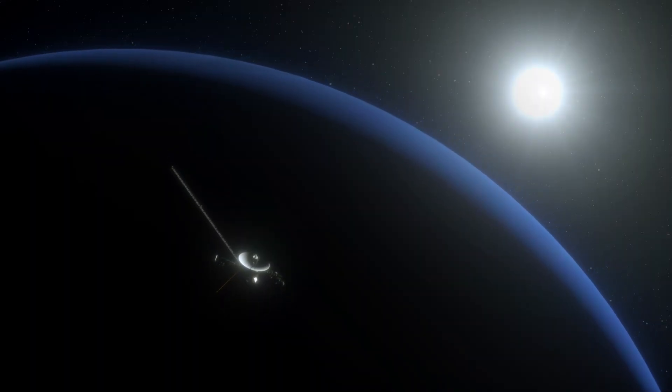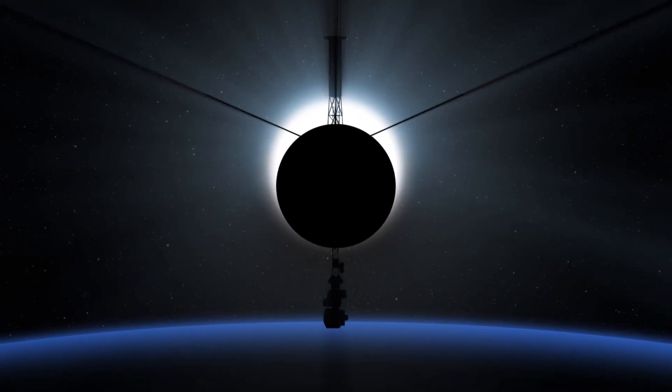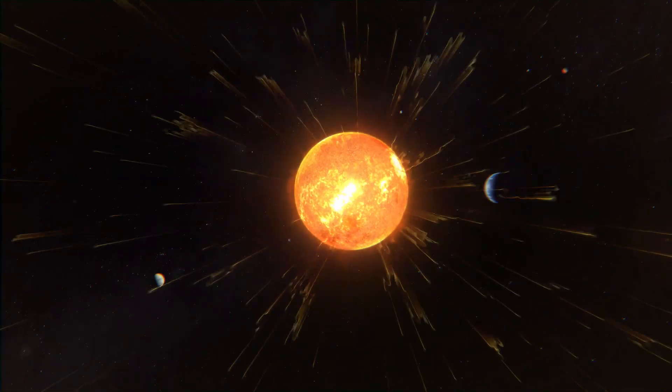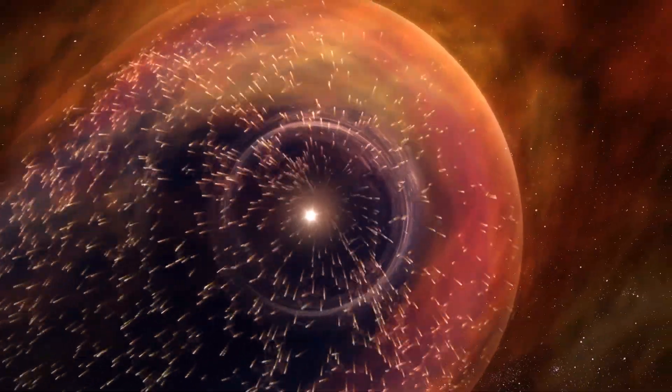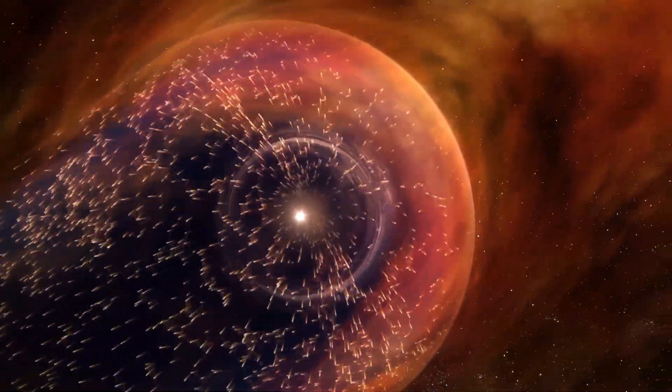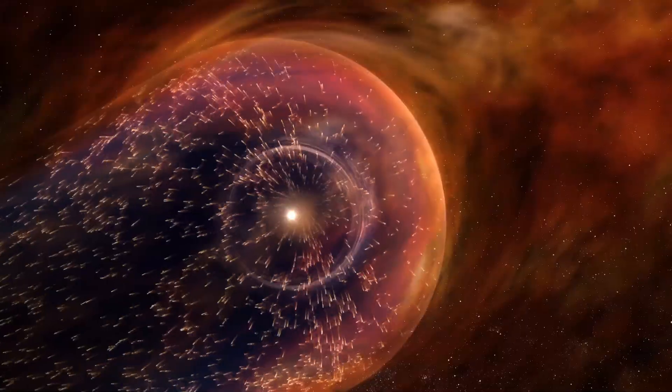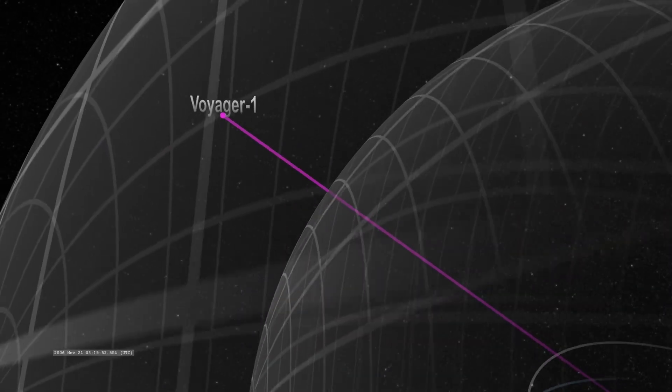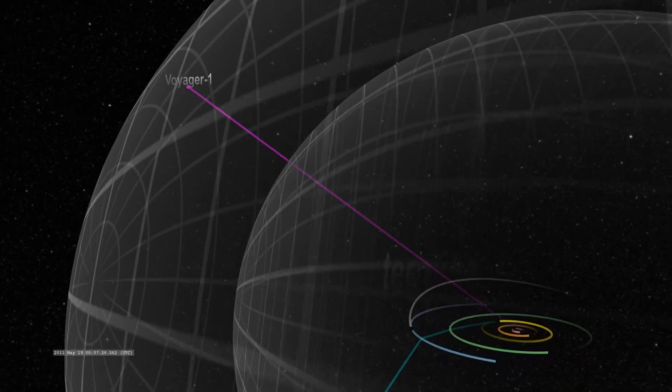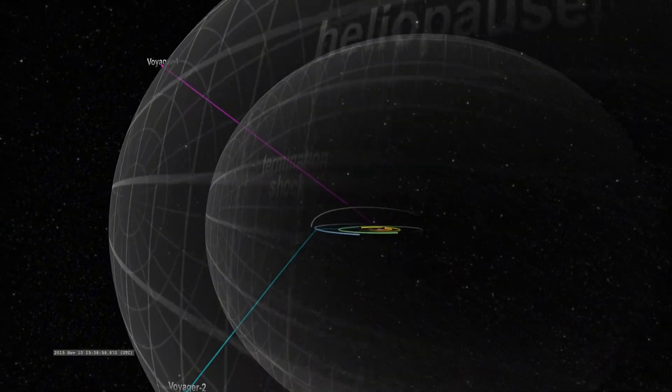When the calendar turned to August 2012, Voyager 1 made history. It crossed the heliopause, the invisible boundary where the solar wind's influence ends and interstellar space begins. That moment marked humanity's first step outside the sun's protective shield.